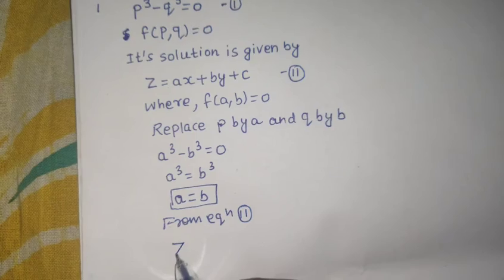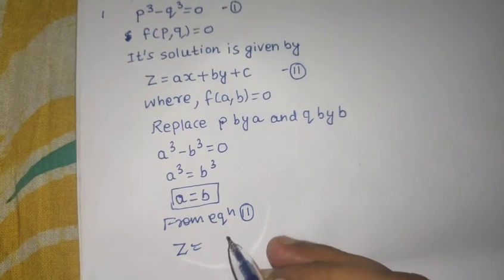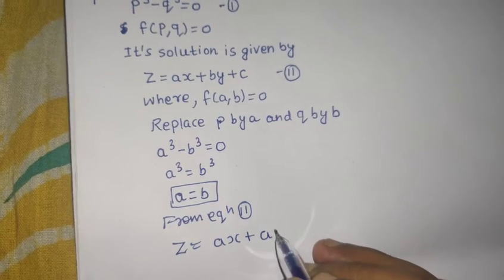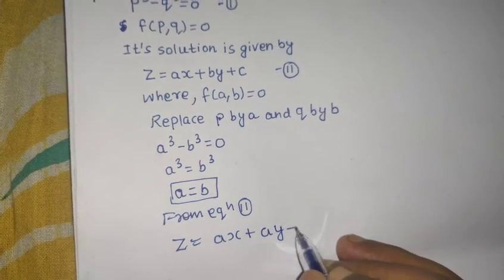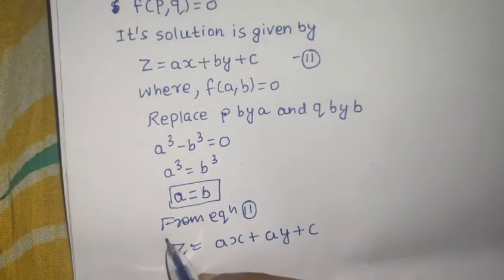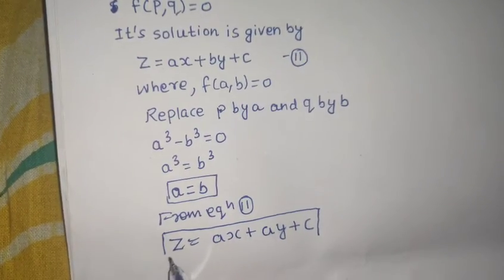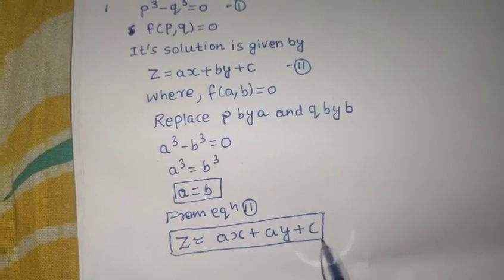So, we can now write Z = AX. In place of B we can write A, so AY + C. This is your final solution: Z = AX + AY + C.